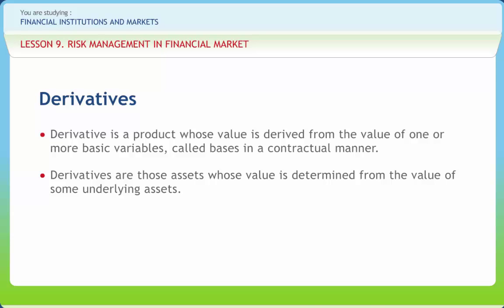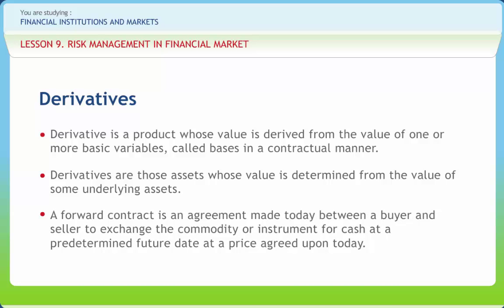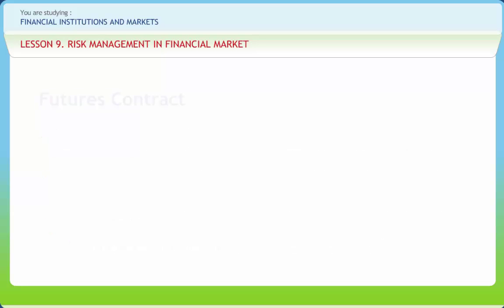There are many kinds of derivatives, with the most notable being swaps, futures, and options. A forward contract is an agreement made today between a buyer and seller to exchange the commodity or instrument for cash at a predetermined future date at a price agreed upon today. A futures contract is a standardized contract between two parties to buy or sell a specified asset of standardized quantity and quality at a specified future date at a price agreed today.